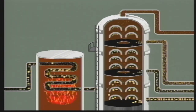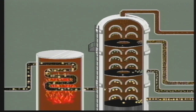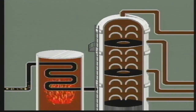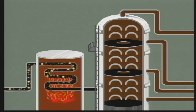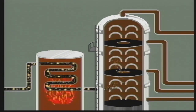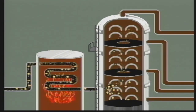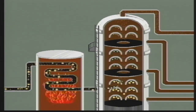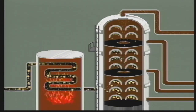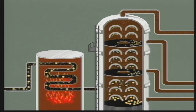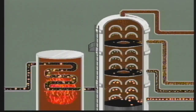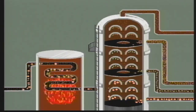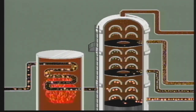Crude oil is separated into many fractions. A mixture of two or more liquids separates when boiled. The liquid with the lowest boiling point goes to the top. The liquid with the highest boiling point stays at the bottom. Separating a mixture of liquids this way is called fractional distillation.